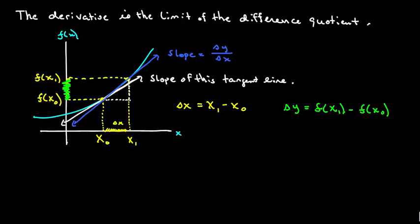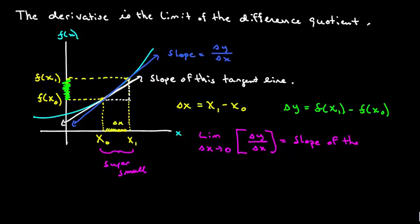Well now, the slope of the blue line becomes closer to the slope of the white line as delta x gets really small. So how we write that, using limits, is we say the following. We say the limit as delta x gets small, or as it goes to zero, as this length right here becomes super small, as we take the limit of it. So as we take the limit of delta y over delta x, that will be equal to the slope of the white line, which is the actual tangent line.